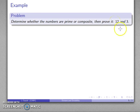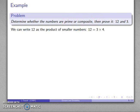Determine whether the following numbers are prime or composite. Then prove it. So our numbers are 12 and 3. And prove it means we have to go back to the definition of prime or composite. So let's see. Well, 12 is easy. I can write 12 as the product of smaller numbers. 12 is equal to 3 times 4. And that's all I need to determine that 12 is composite. So because I can write 12 as the product of smaller numbers, 12 is composite.